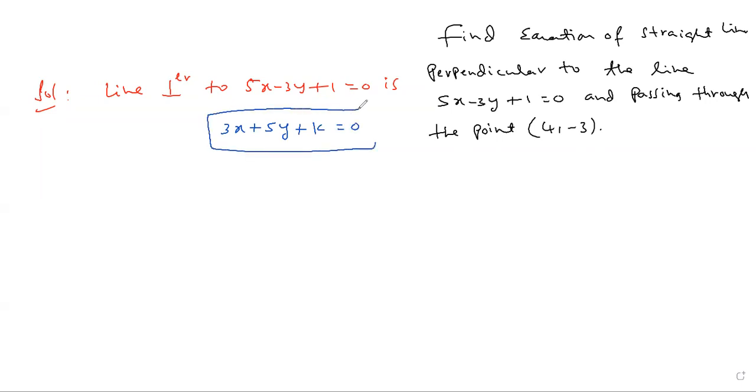How to write a perpendicular line: observe, simple - interchange x and y coefficients, after that change sign in between x and y, constant always plus k.